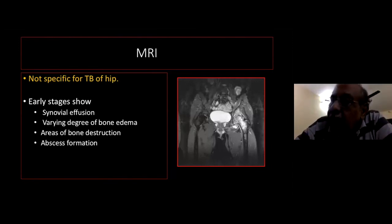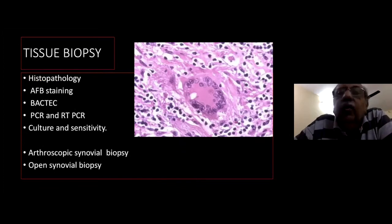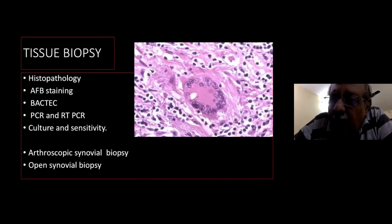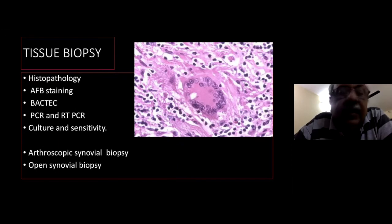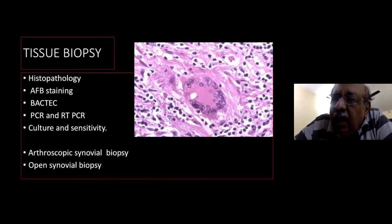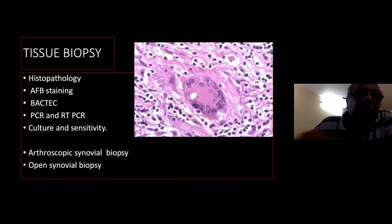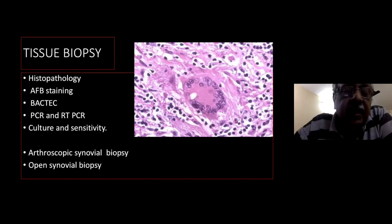MRI is not specific for tuberculosis; it shows synovial effusion, varying degrees of bone oedema, areas of bone destruction, and abscess formation. Tissue biopsy is sent for histopathological staining — the characteristic finding is caseating necrosis surrounded by epithelial cells, macrophages, and Langhans giant cells. Send also for AFB staining and BACTEC culture (which gives results early). PCR detects organisms but cannot distinguish between dead and active bacilli, while RT-PCR is more useful. Culture on Lowenstein-Jensen medium takes six weeks to two months.